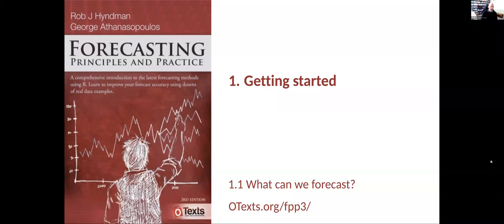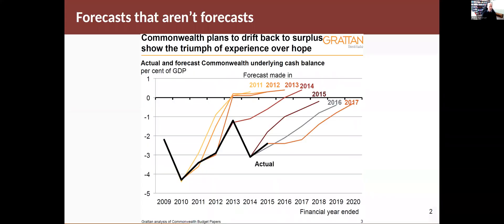Let's talk about what we can forecast and what's easy to forecast versus what's difficult to forecast. First of all, let's be clear what is a forecast. The Australian government produces these things every year and they call them forecasts, but they're clearly not. This is a published forecast of Commonwealth underlying cash balance.